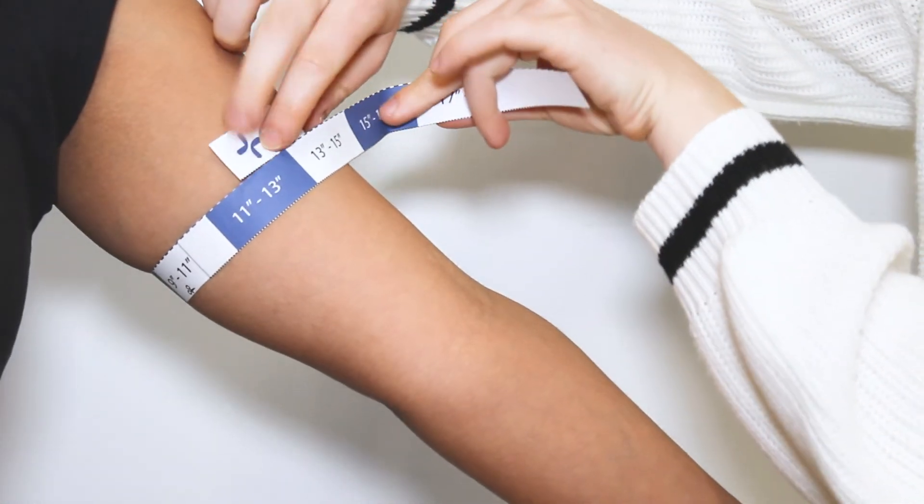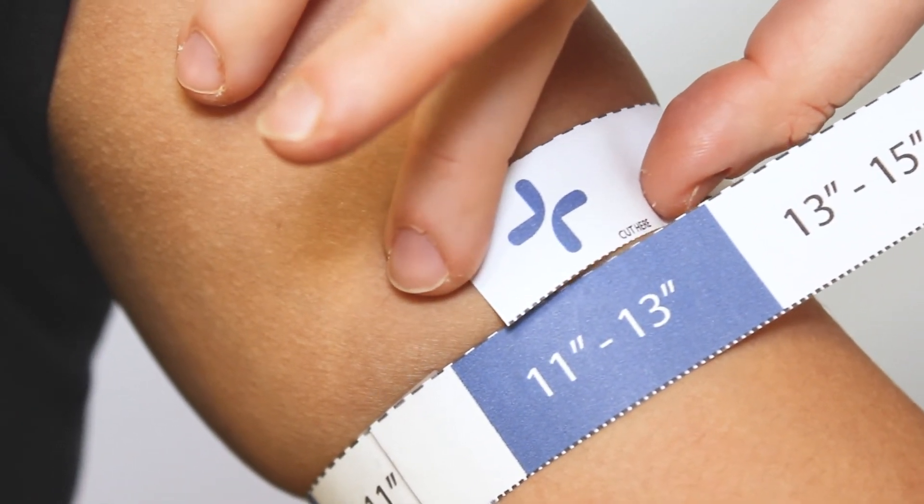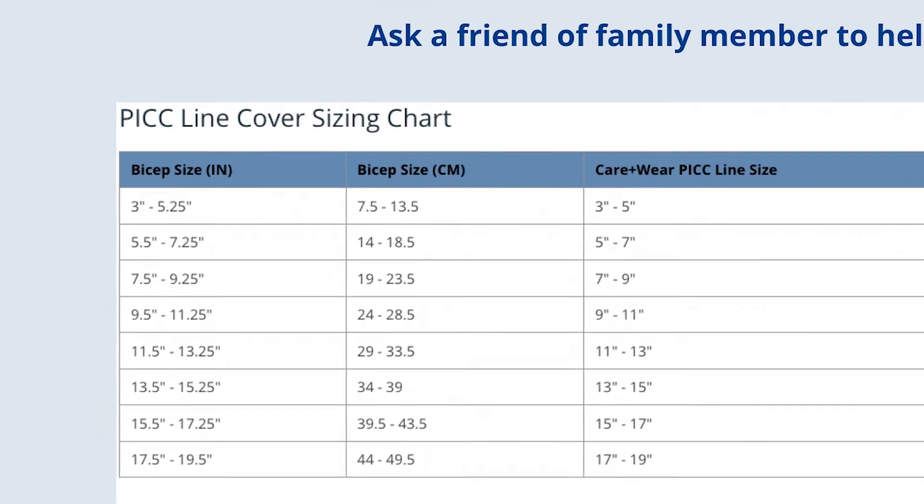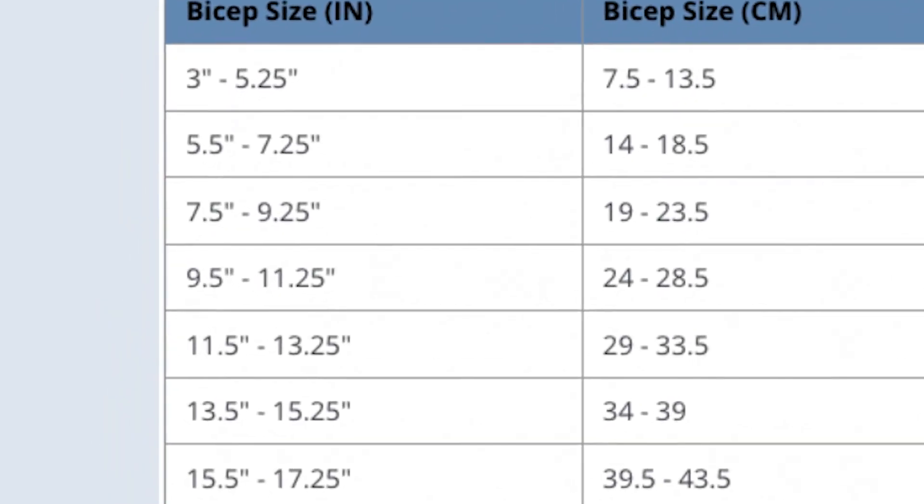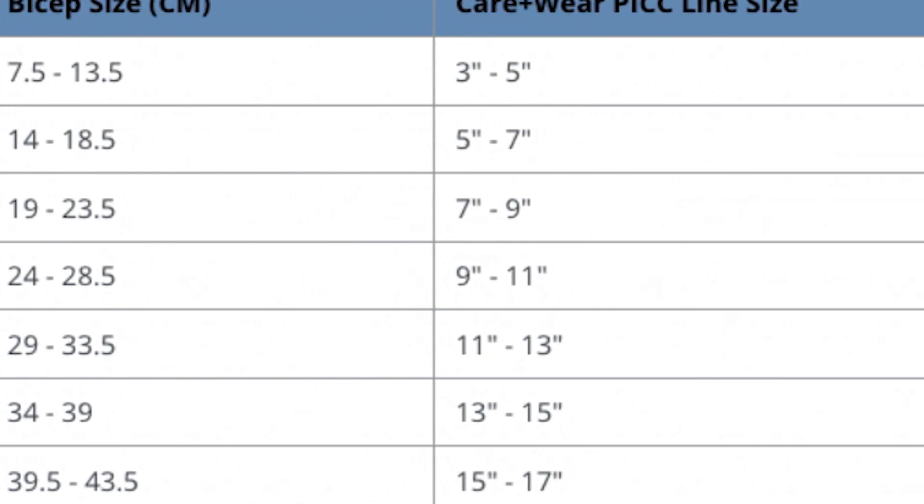To measure, hold the tape around your arm at the largest part of your PICC line site. Take note of where the end of the tape with the logo lands on the overlapping tape. The section where this falls will tell you your Care and Wear PICC cover size, which will apply to both the ultra grip and ultra soft PICC line covers.